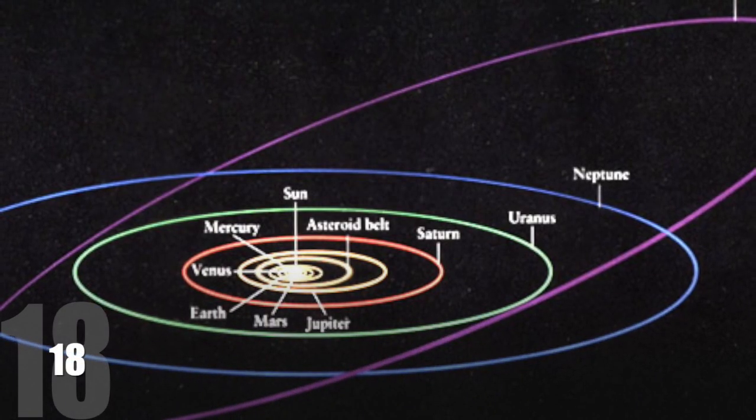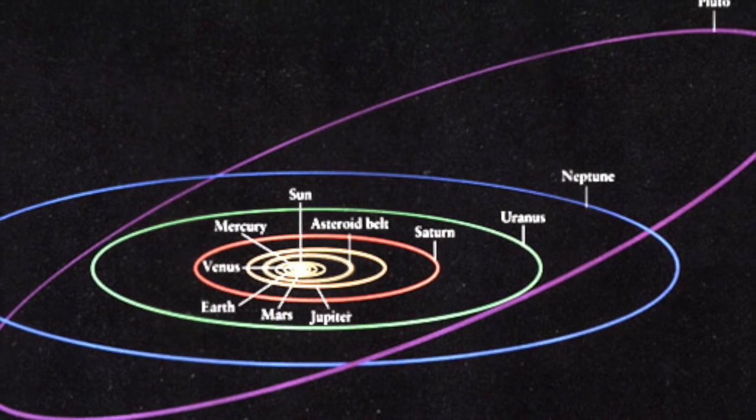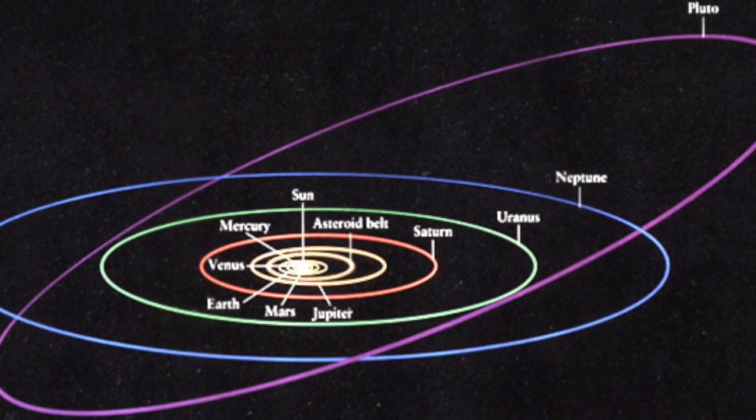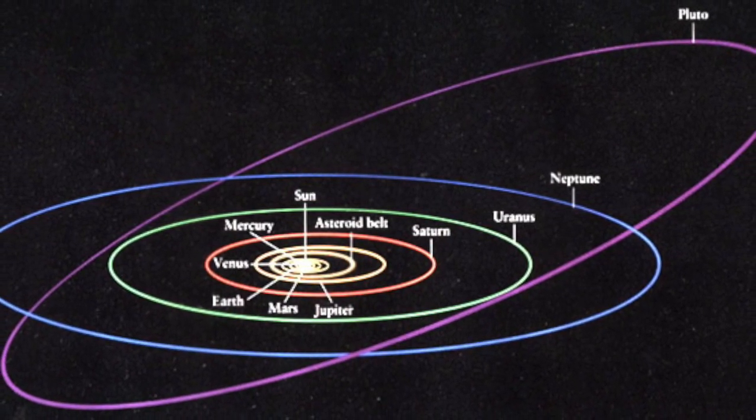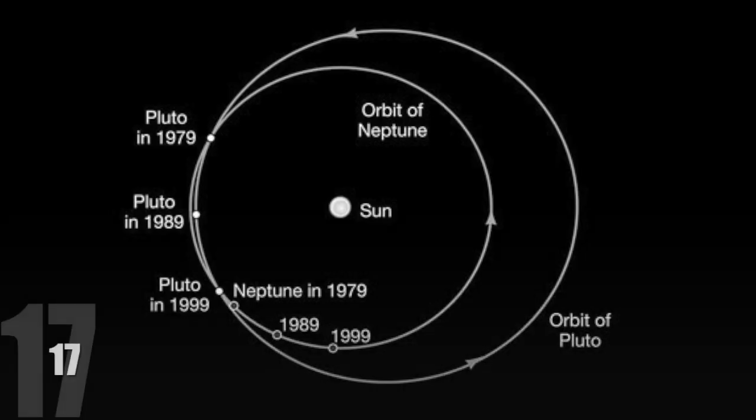18. Pluto takes 248 Earth years to complete one orbit. To put this into perspective, Pluto still has 160 years to go in order to make a full orbit around the Sun since it was first discovered. 17.